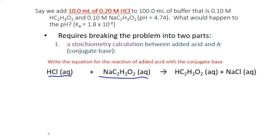We write the equation for the reaction of the added acid with the conjugate base. The base will extract the hydrogen from the acid, and the hydrogen combines with the acetate ion to form acetic acid as one of the products. The other product is what's left over after the hydrogen combines with acetate, which is sodium and chloride — so that forms sodium chloride as our other product.